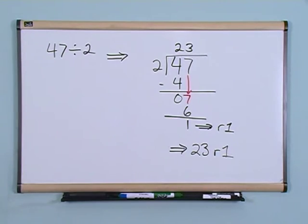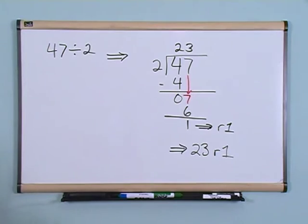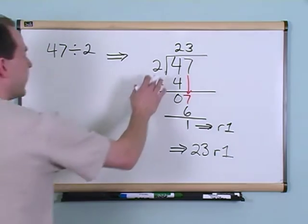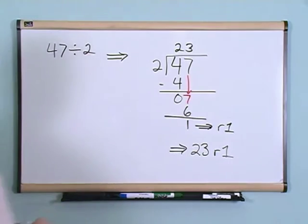So what this means is that if you take 47 and you divide by 2, then that will go in 23 entire times, but then you'll have one ball left over. You can't go an even number of times.